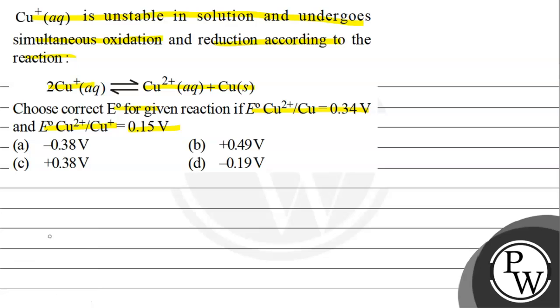The key concept for this question is ΔG° = -nFE°cell, where ΔG is Gibbs free energy, n is number of electrons, F is Faraday constant, and E°cell is standard electrode potential of the cell.